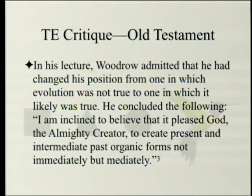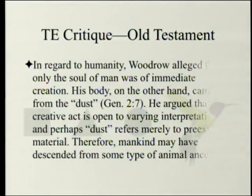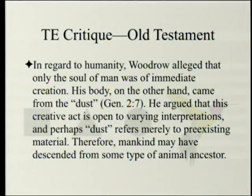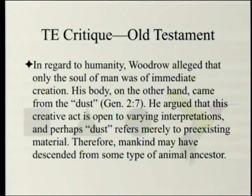Woodrow concluded: 'I'm inclined to believe that it pleased God, the almighty creator, to create present and intermediate past organic forms, not immediately, but mediately.' In regard to humanity, Woodrow alleged that only the soul of man was of immediate creation. His body came from the dust — Genesis 2:7. He argued that this creative act is open to varying interpretations and perhaps refers merely to pre-existing material. Therefore, mankind may have descended from some type of animal ancestor.